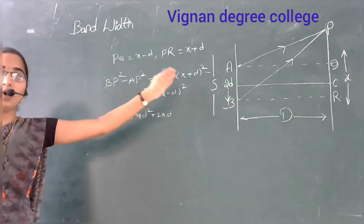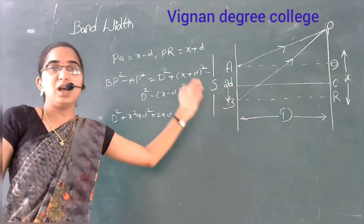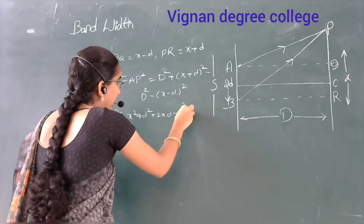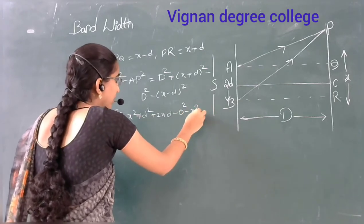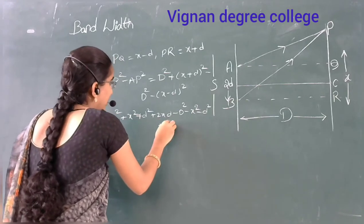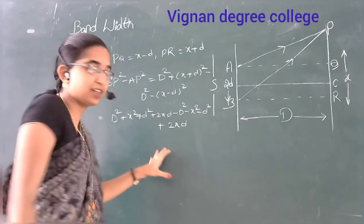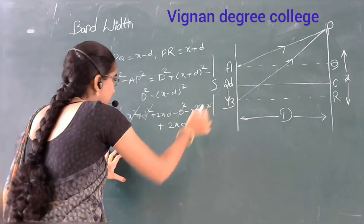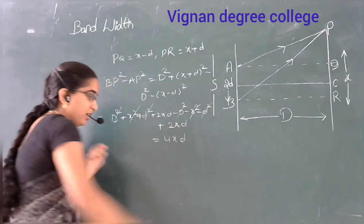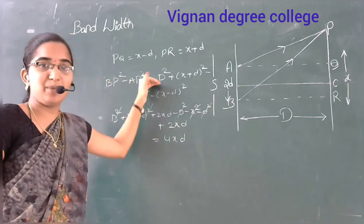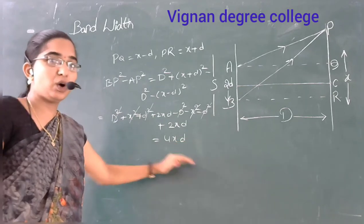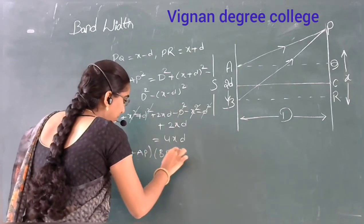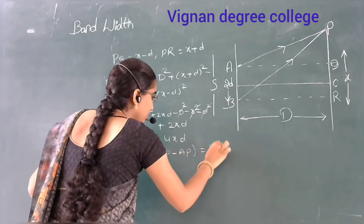Continuing the expansion: d squared plus x squared plus d squared plus 2xd, minus d squared minus x squared minus d squared plus 2xd. After cancellation of d squared, x squared, and d squared terms, the result is 4xd. So BP squared minus AP squared equals 4xd.